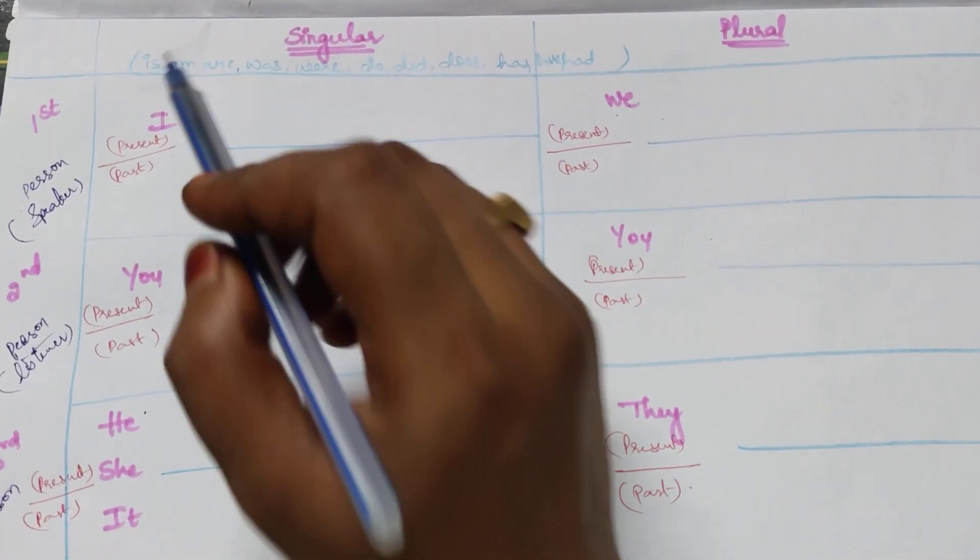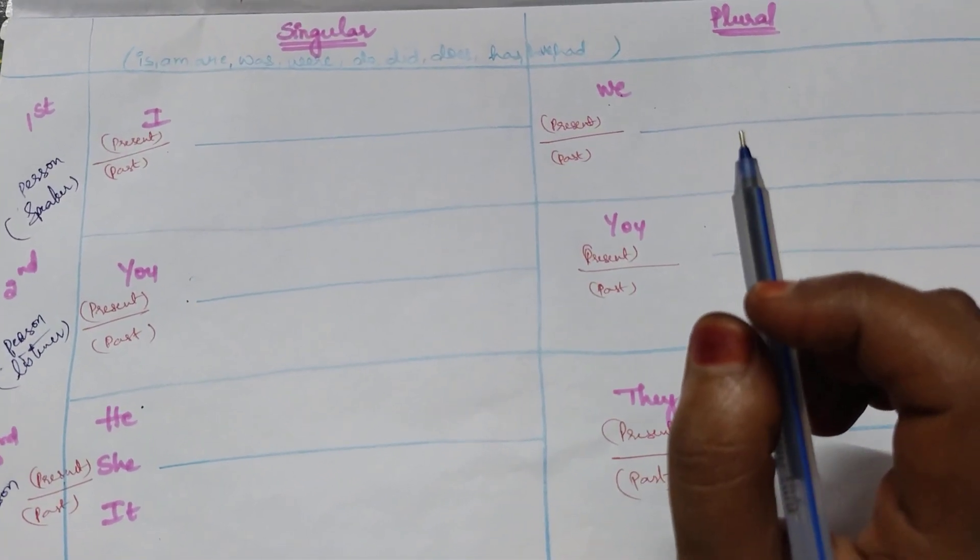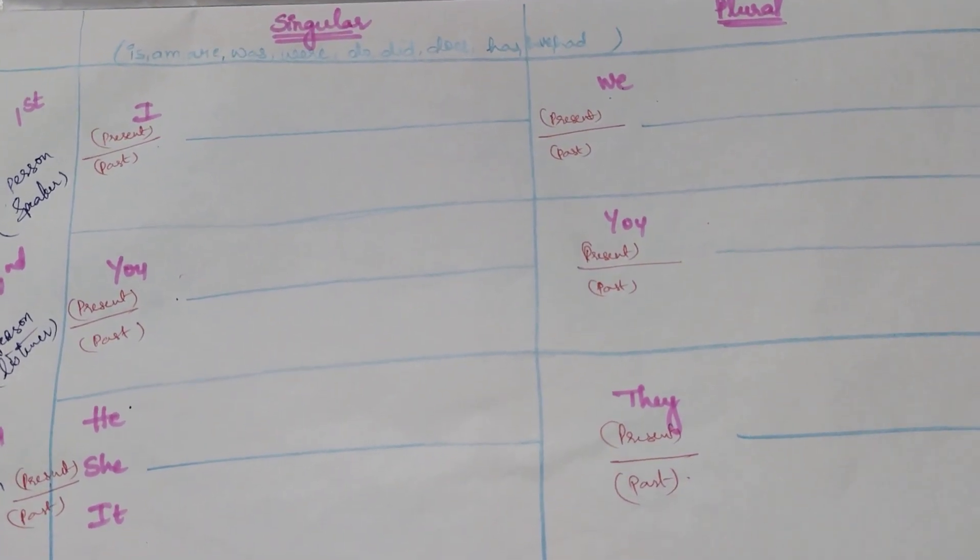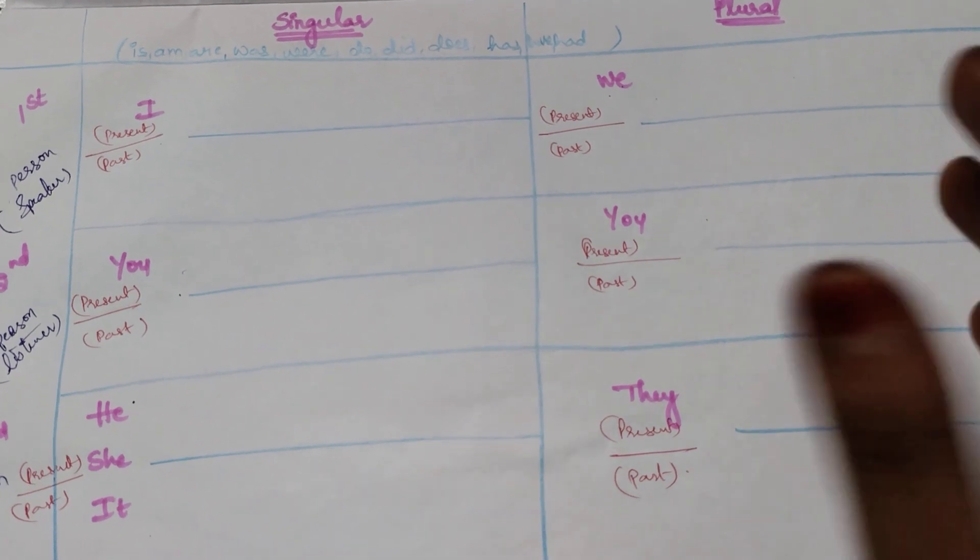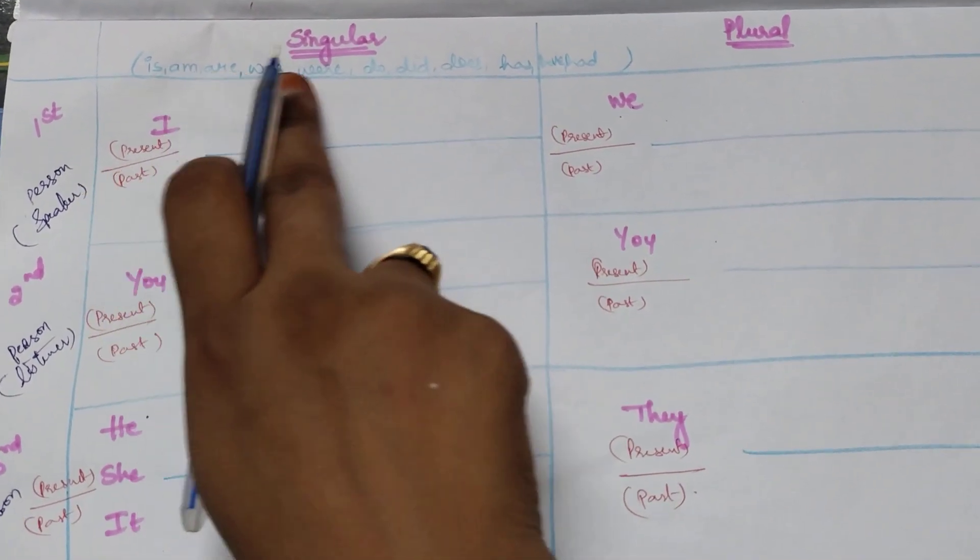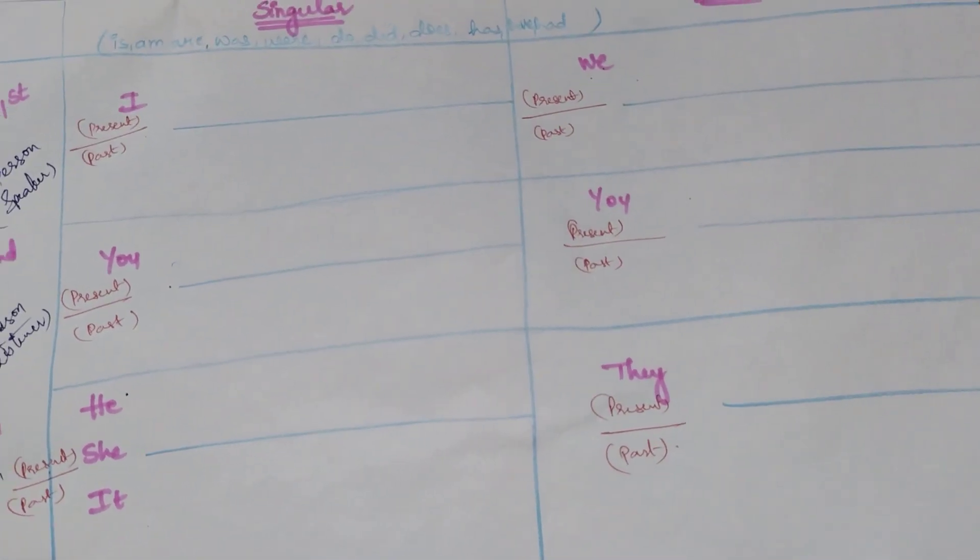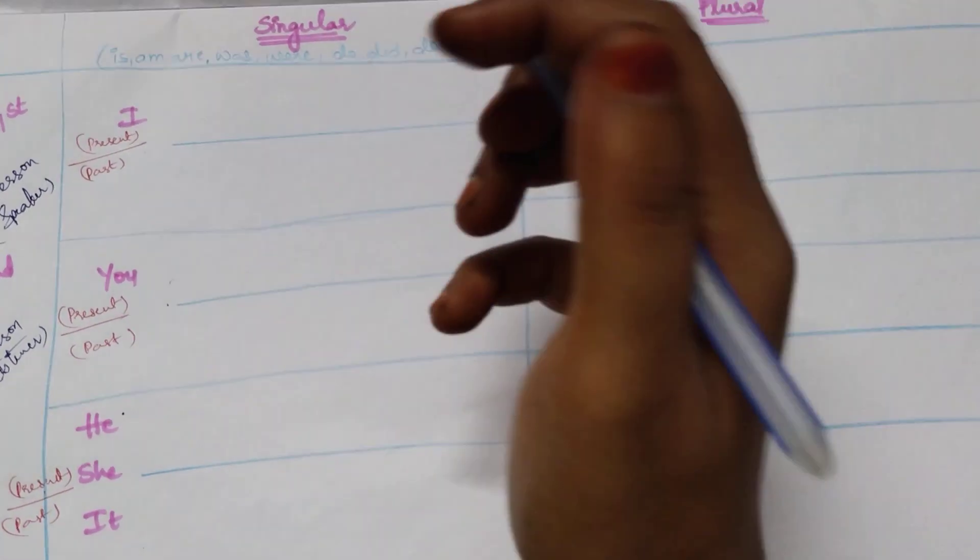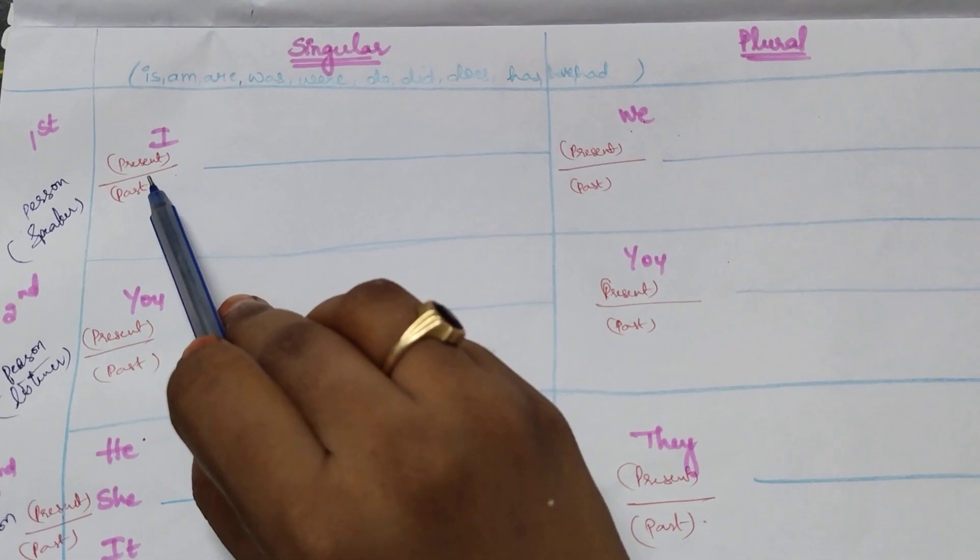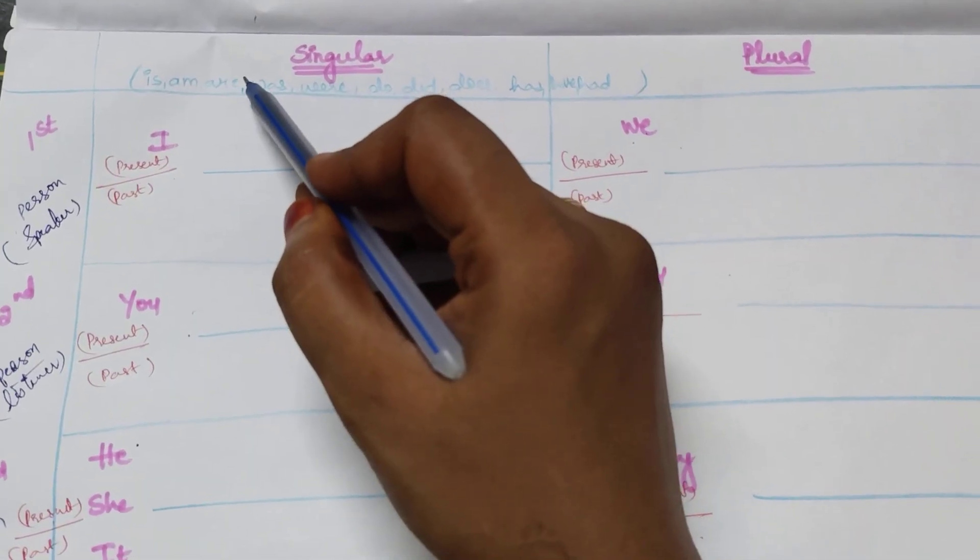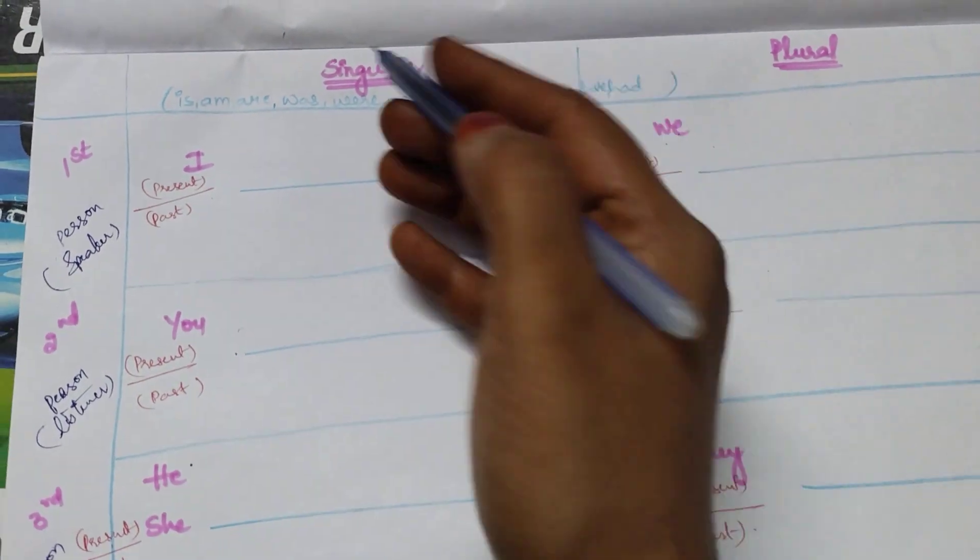So we are having the most important thing or the area where we commit many mistakes - subject and verb agreement. Okay. Don't be panic about listening such words. It is nothing very simple. Subject, verb, agreement. So for which subject, which verb should be selected.